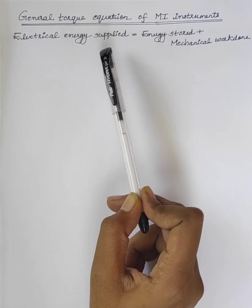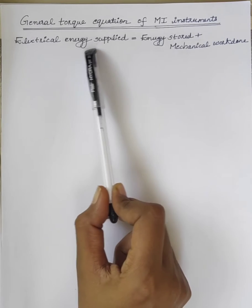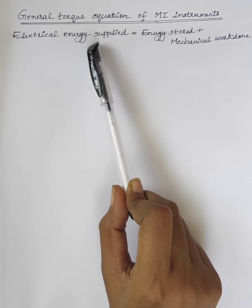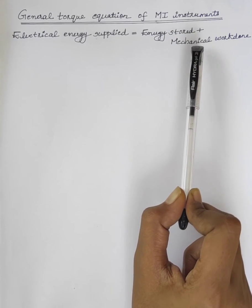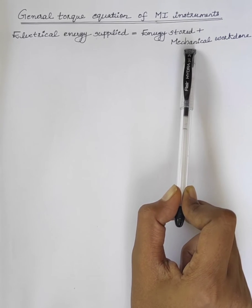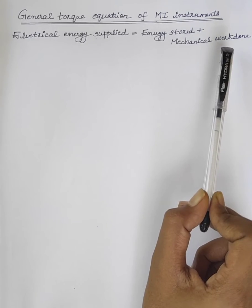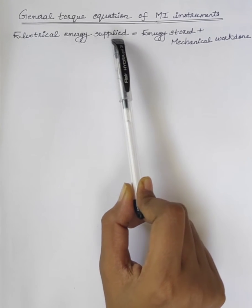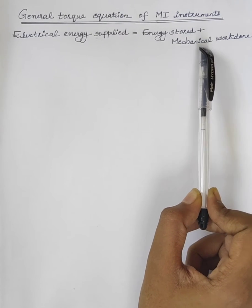To work any instrument, we have to supply some electrical energy. A part of this electrical energy is stored and the remaining energy will be converted into mechanical energy to produce a deflection. So, first we have to find out electrical energy supplied, energy stored, and then mechanical work done.